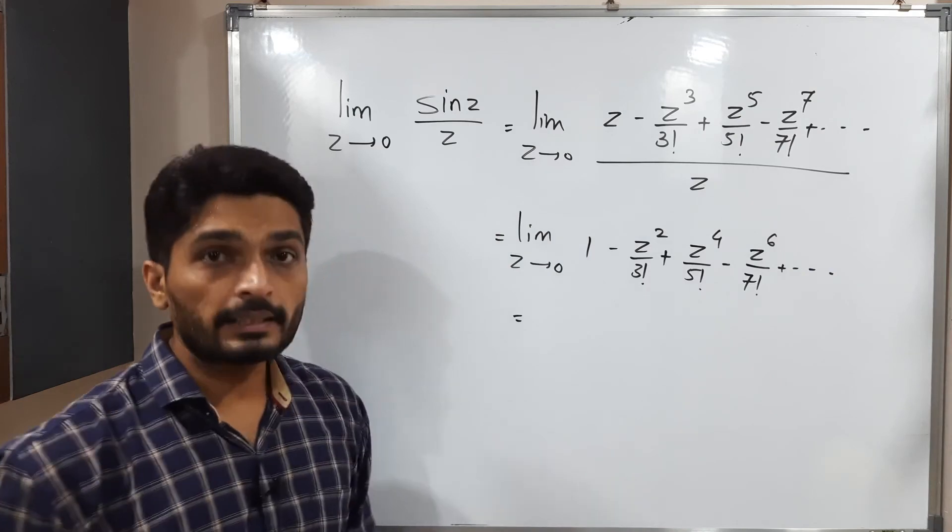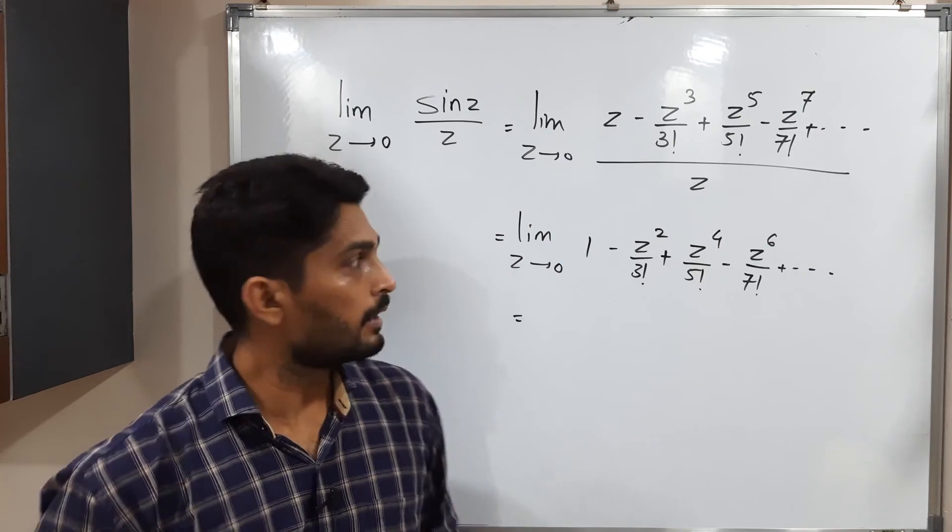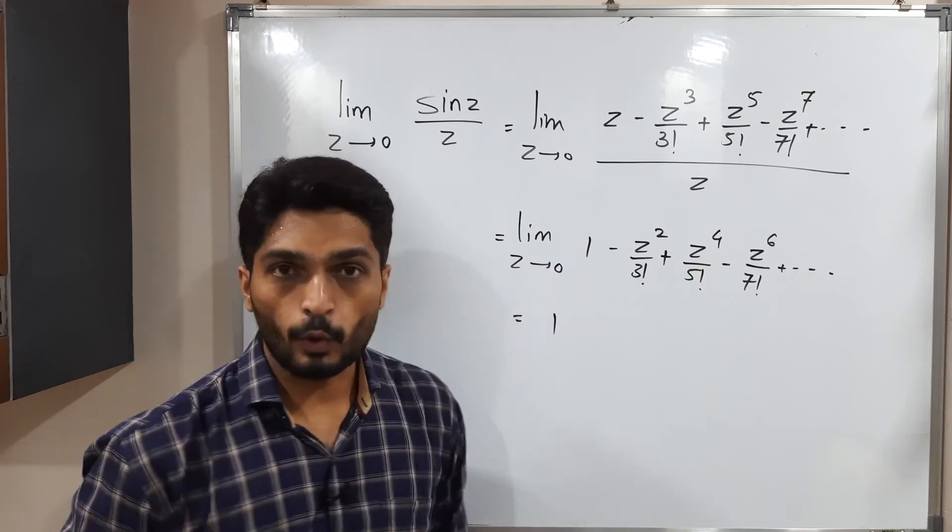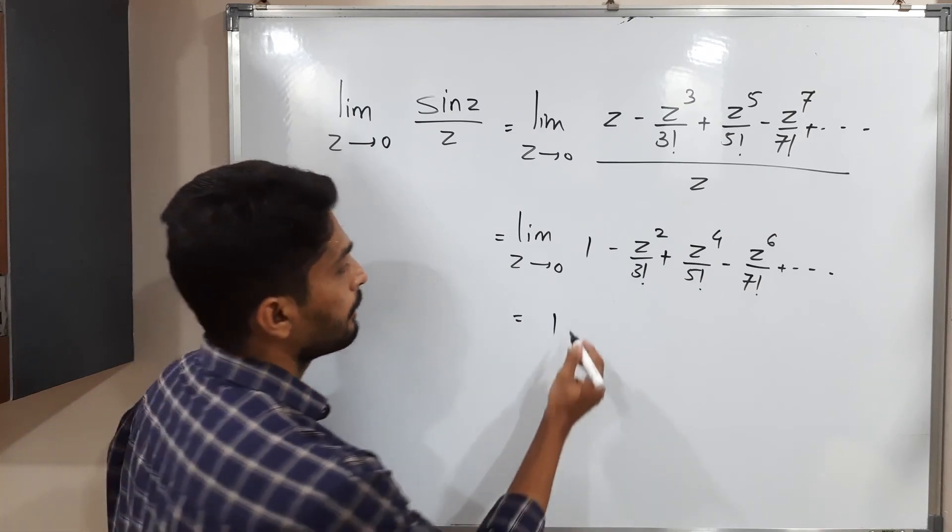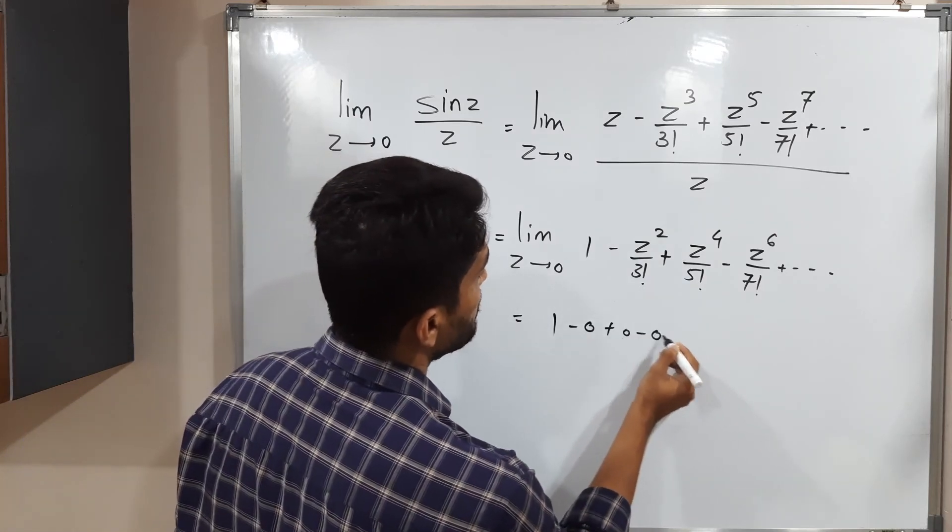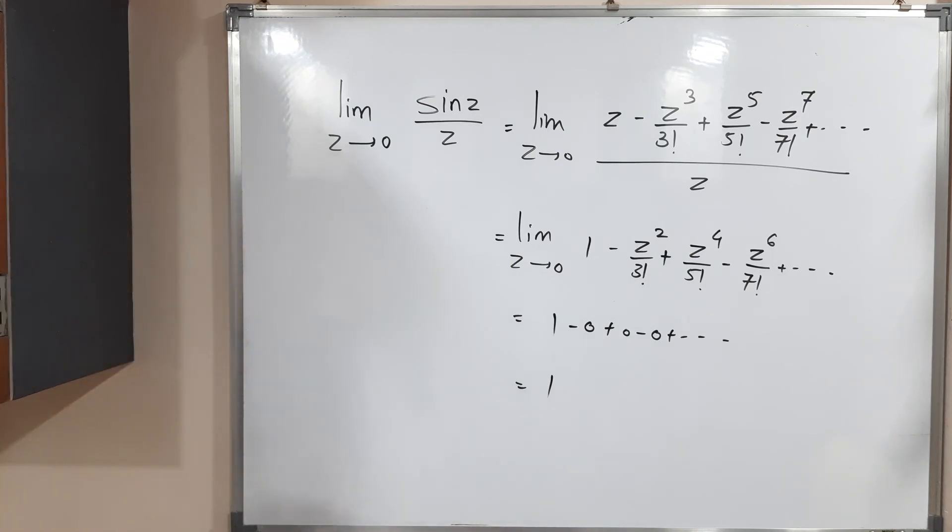If you apply the limit, all z is in numerator so you can directly put value of z equal to 0. So 1 will be there since it is constant but for all remaining terms you will have zeros: minus 0 plus 0 minus 0. So what is the final answer? 1. So value of this limit is 1. Okay thank you, bye bye.